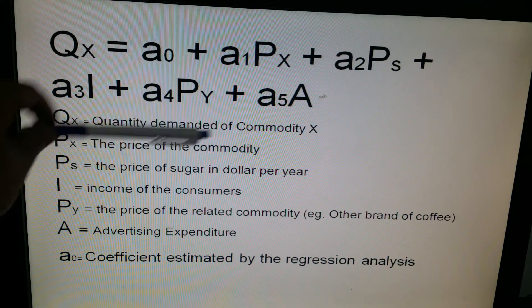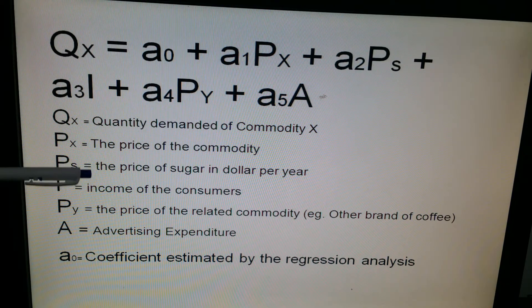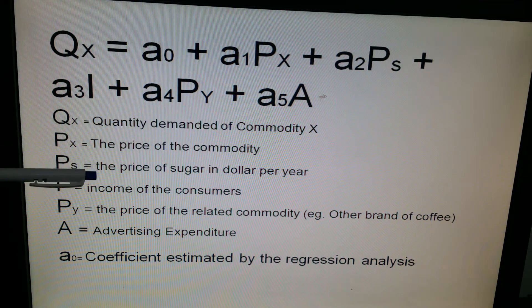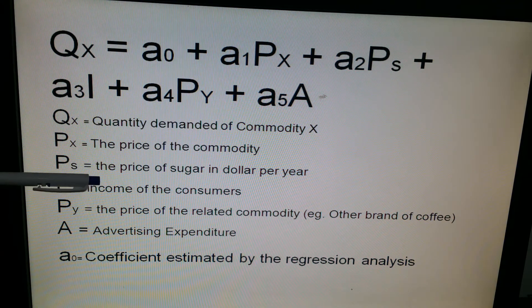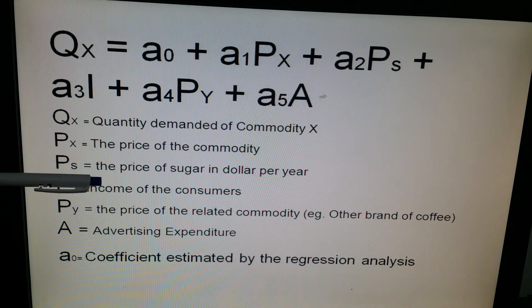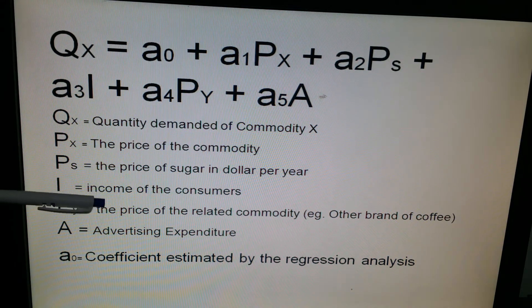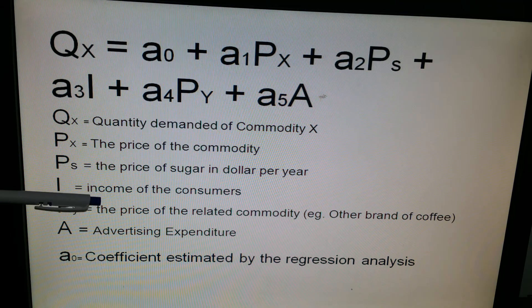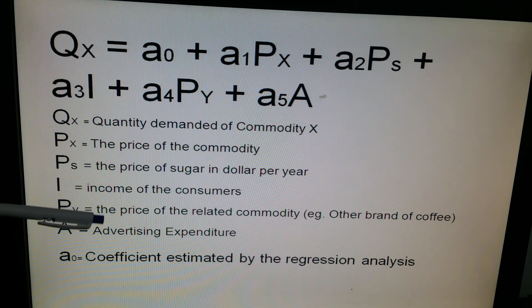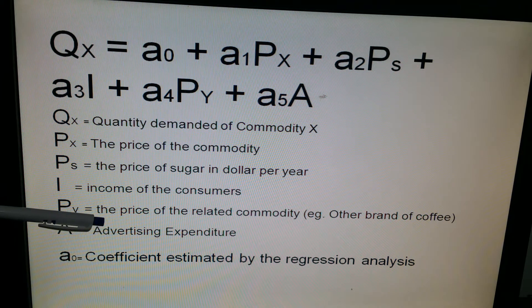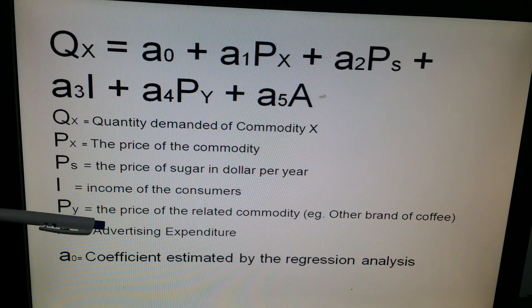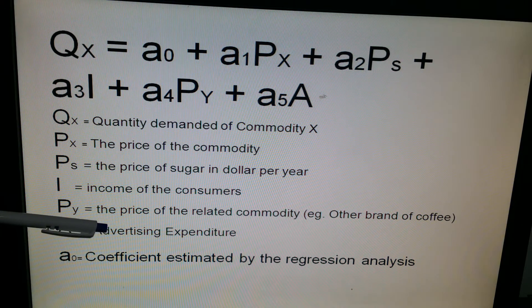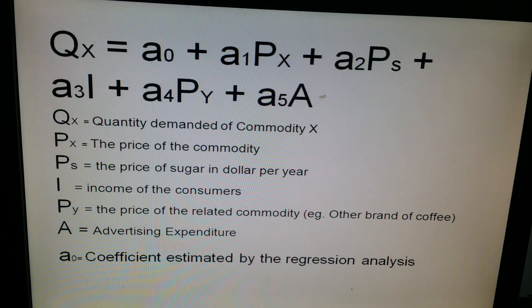PX means the price of the substitute commodity, which in this case hypothetically we call sugar, we've taken it to be sugar. And then it depends upon the income of the consumer. It depends upon the price of related, some related commodities, right? Maybe in this case the complement, so we are going to say PY.